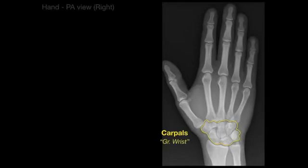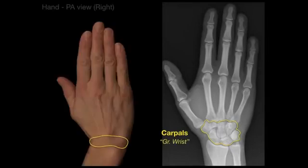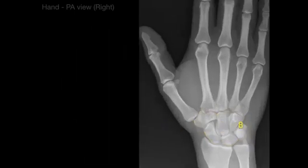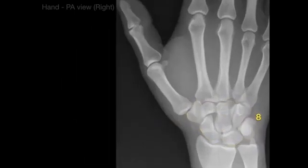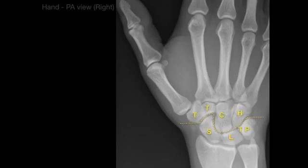Carpals is Greek for wrist, and those are the wrist bones right there — two rows of eight bones. If we put an imaginary line through, there are four proximal carpal bones and a row of four distal carpal bones.